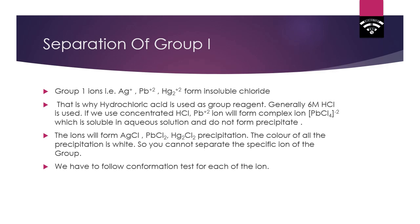If we use more concentrated HCl, then Pb²⁺ may form a complex ion PbCl₄²⁻ which is soluble in aqueous solution. If it forms, then we cannot get the white precipitate of lead chloride.